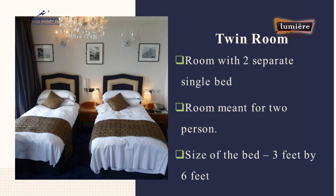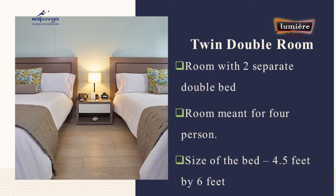The next category is twin room — a room with two separate single beds. This room is for two persons, and the size of each bed is three feet by six feet. The next category is twin double room, also known as double-double room. This is a room with two separate double beds, meant for two to four persons. The size of the bed is four and a half feet by six feet.